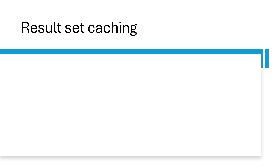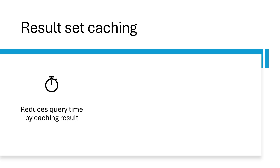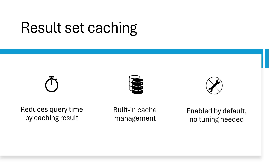Result set caching is an upcoming performance optimization for the Fabric Data Warehouse and Lakehouse SQL endpoint. Whenever possible, the feature saves the results of a query and retrieves those results directly from cache upon subsequent hits — this drastically cuts down execution time for repetitive queries. As more queries are added, the cache is automatically managed on a reuse policy to keep relevant cache alive and usable. Once result set caching is enabled for your artifact, there are no other steps needed — it'll automatically apply whenever possible. Now let's see this feature in action.